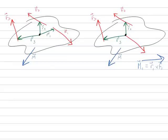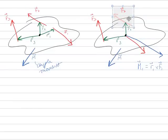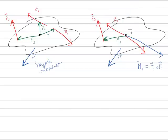So I'll draw that couple moment coming out of the point. I'm going to replace F1 with that couple moment there. Now I can take F2, and if I want to, I can bring him back to the central point as long as I replace him with a moment M2, which is R2 cross F2.